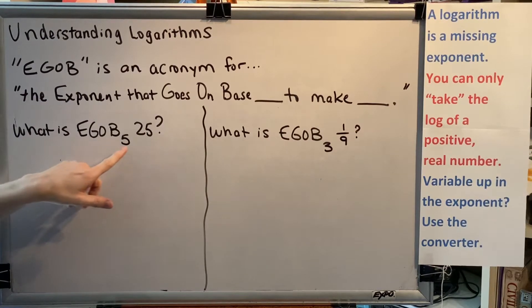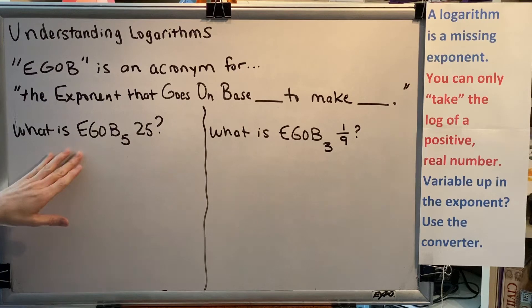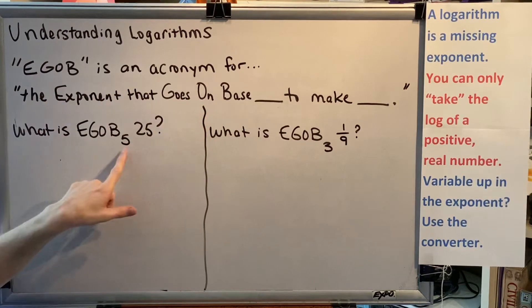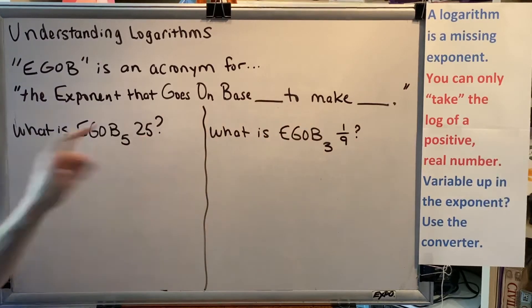What is EGOB 5, 25? Or said another way, what is the exponent that goes on base 5 to make 25? Let's see if we can figure that out.